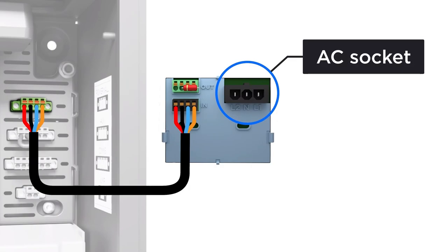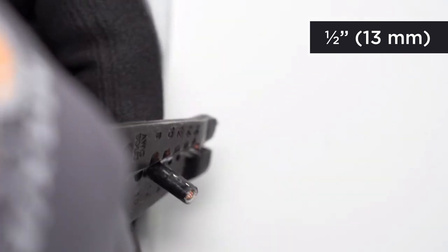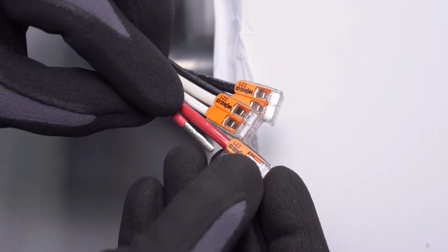Within the wiring compartment, notice the AC socket in the top right corner. Strip half an inch of insulation off the ends of the red, black, and white AC conductors.